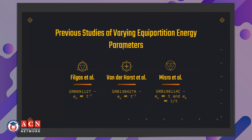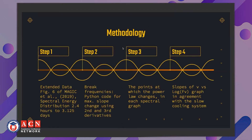However, there have been selective studies that previously assumed equipartition energy parameters to not be constant. Filgas et al. and van der Horst et al., considering two different GRBs, showed that epsilon_e may actually be inversely proportional to time, with the relationship epsilon_e ∝ t^(−2). However, a more recent study by Misra et al. showed that for this particular GRB, epsilon_e had a direct proportional relationship with time, while epsilon_B had an inverse relationship with time.